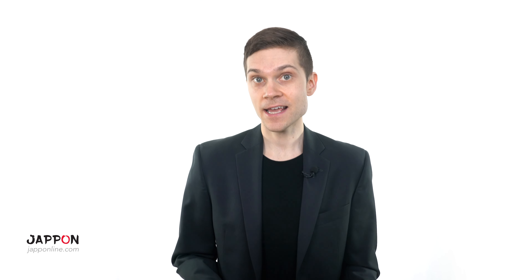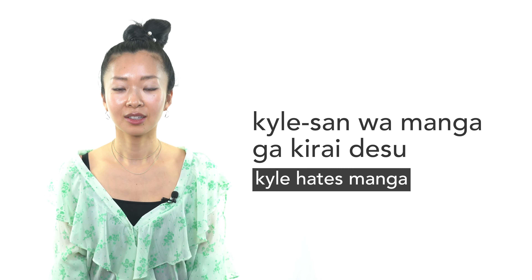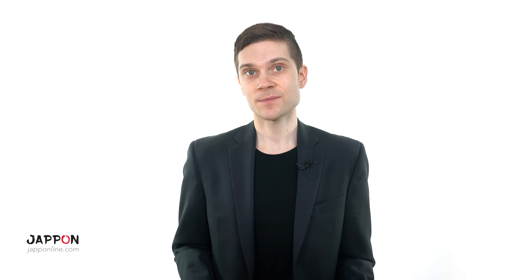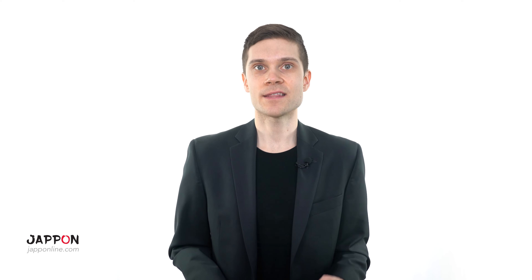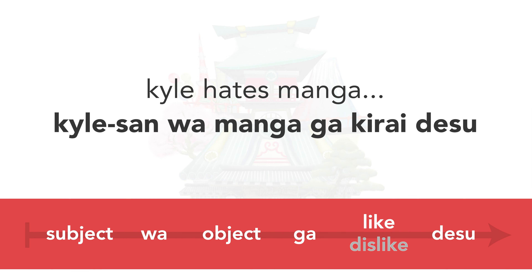Let's now move on to the next example where we will state what we don't like. Kyle-san wa manga ga kirai desu — Kyle hates manga. Before I explain this phrase, I just want to mention that this example is for educational purposes only — I actually do like manga. Notice how compared to the previous example, this phrase includes the subject Kyle, as Chisa was talking about me and not herself, so no omission needed here. The only unique thing here is the use of kirai, meaning to dislike, rather than suki, meaning to like.